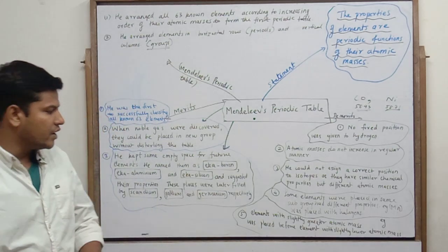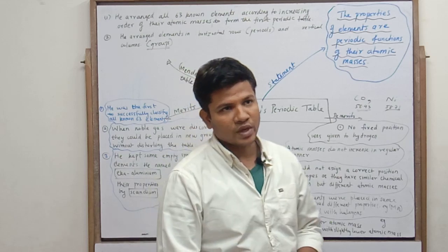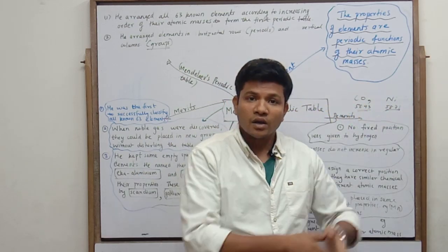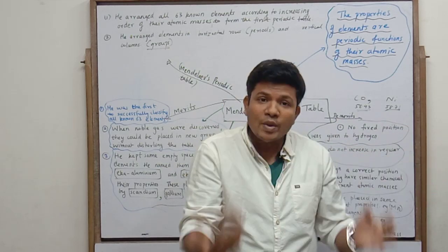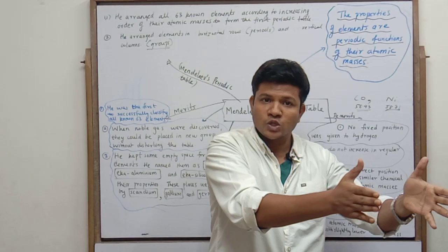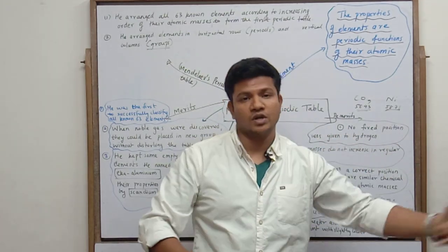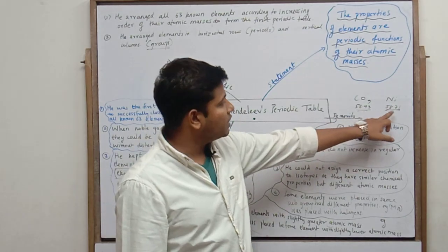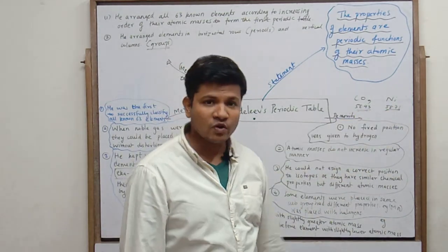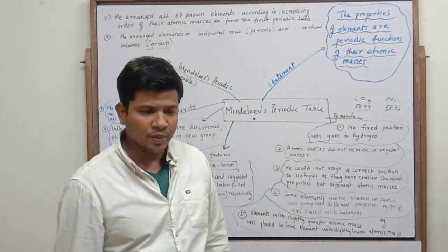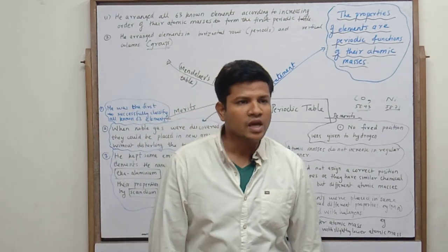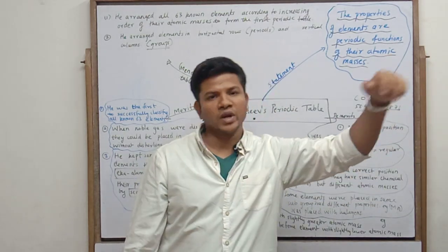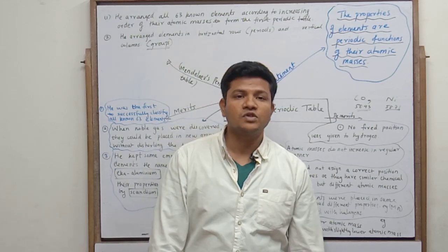Fifth problem: elements with slightly greater atomic mass were placed before elements with slightly lesser atomic mass, which contradicted the law of increasing atomic mass. For example, cobalt was placed before nickel — cobalt is 58.93 and nickel is 58.71. Similarly, there is an example with aluminium and silicon. This was Mendeleev's periodic table and these were its demerits.